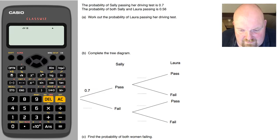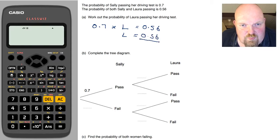Now, the way I'm going to do that is I'm going to say that we know that the probability of Sally passing multiplied by the probability of Laura passing equals 0.56. So with a bit of rearranging, I get 0.56 divided by 0.7.